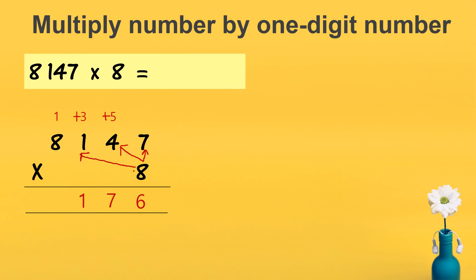And the last one: 8 times 8 is 64. 64 plus 1 is 65. Because there is no number at the front, I can write 65. So the answer is 65,176.